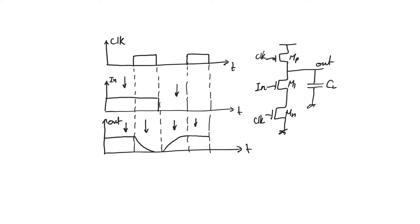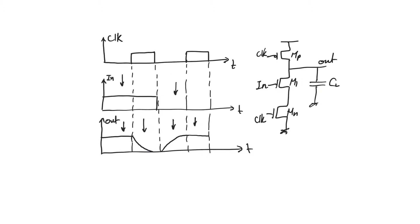Looking at the output node, there are only two possible transitions: either the output drops from VDD down to ground during an evaluate phase where we evaluate a zero, or the output pre-charges back up to VDD in the pre-charge phase. These are the only two transition possibilities.